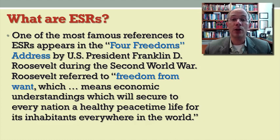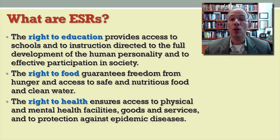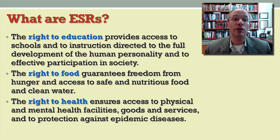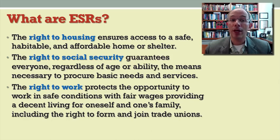From those instruments we can deduce some examples of economic and social rights. First, the right to education, which provides basic instruction and schooling geared toward developing the human personality and encouraging effective participation in society. The right to food, which includes most principally freedom from hunger and access to safe and nutritional food. The right to health, which includes access to physical and mental health care services, facilities, and protection against epidemic diseases. The right to housing and basic shelter, the right to social security, and the right to work in safe working conditions with fair wages that provide a decent living for the worker and his or her family.